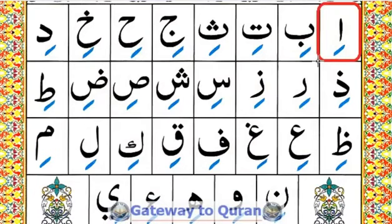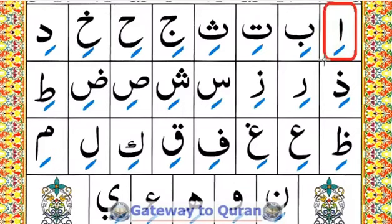Alif kasra = i. You can repeat after me: alif kasra = i.